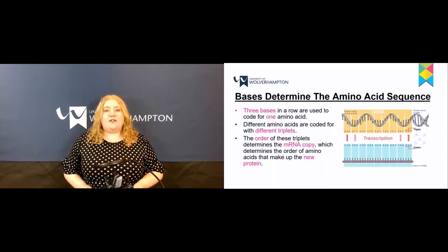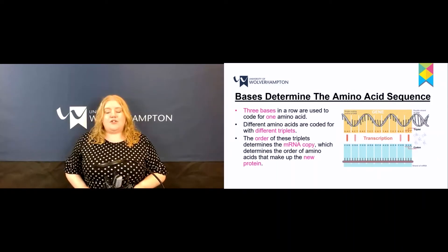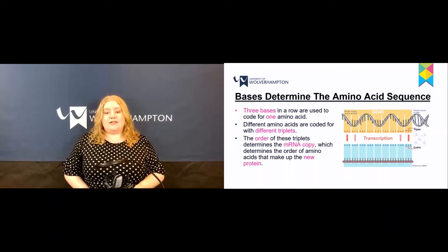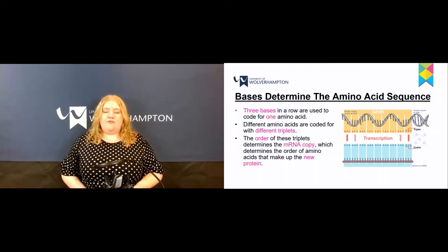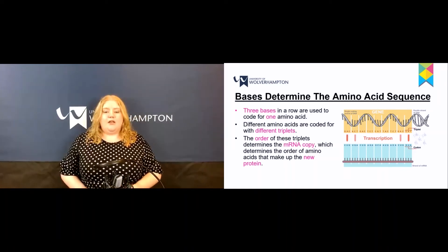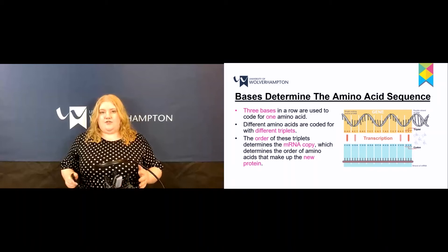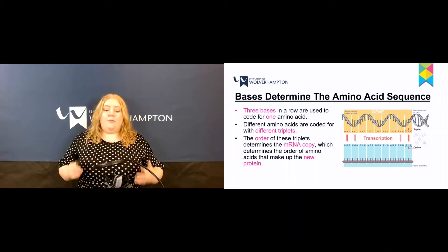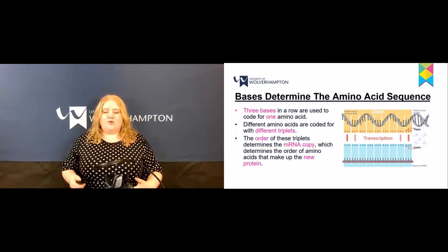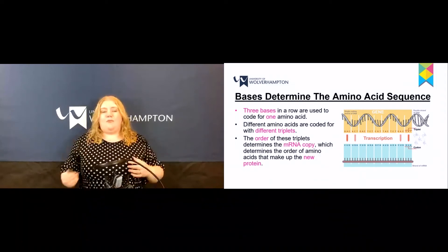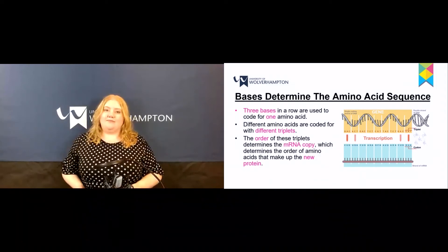Three bases in a row are used to code for one amino acid. Different amino acids are coded for with different triplets. The order of these triplets determines the mRNA copy, which therefore determines the order of amino acids that make up the brand new protein.